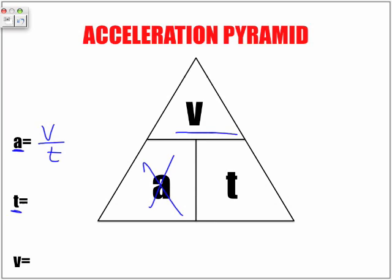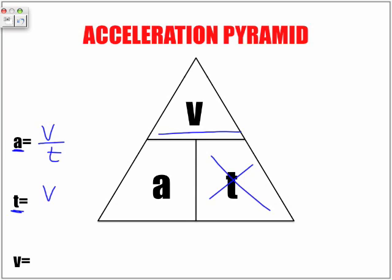If we're trying to find time, we're going to cover up time. Notice the letters: V is on top of A, which means to find time we're going to take our V, which is our speed, and divide it by our A value.